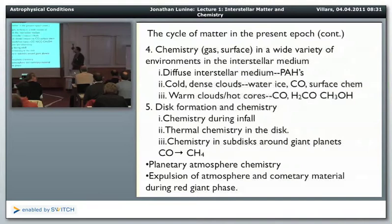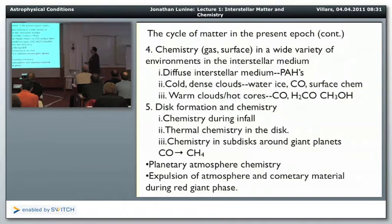And then, of course, ultimately, planets form from these disks and we'll talk about that later this afternoon. So chemistry during in-fall exposure to shocks, thermal chemistry in the disk, chemistry even in concentrated regions, higher pressure, regions around giant planets as they form produces completely different molecular abundances, more CH4 and less carbon monoxide, for example. And then, planets have atmospheres.